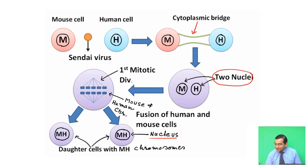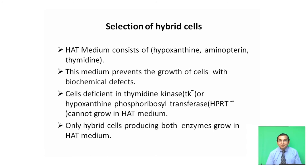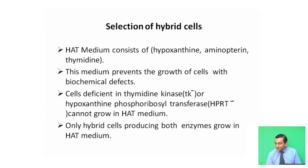This is the hybridization, that is, the fusion of human and mouse cells. This fusion or hybridization can be used for gene mapping. For gene mapping, one important part of the experiment is the selection of hybrid cells. HAT medium is used for the selection purpose. HAT medium consists of hypoxanthine, aminopterin, and thymidine. This medium prevents the growth of cells with biochemical defects. Only hybrid cells producing both enzymes grow in HAT medium.